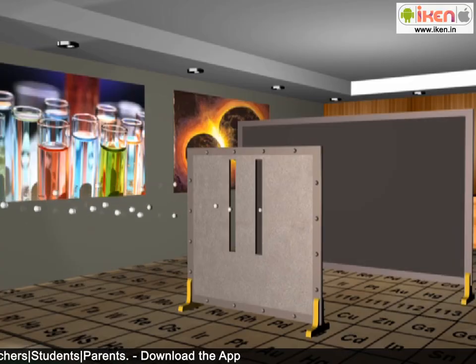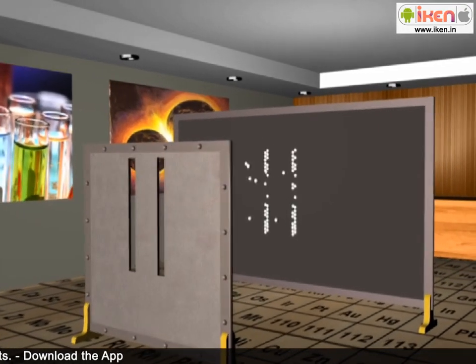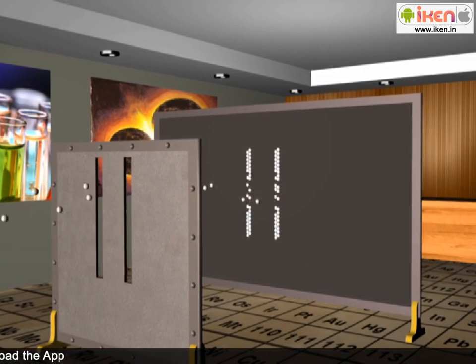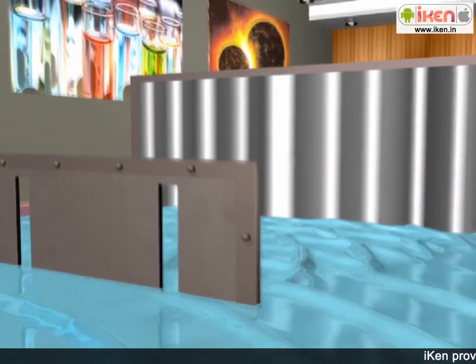So when we throw things that are matter through two slits, we get these two bands of hits. And with waves, we get an interference pattern of many bands.